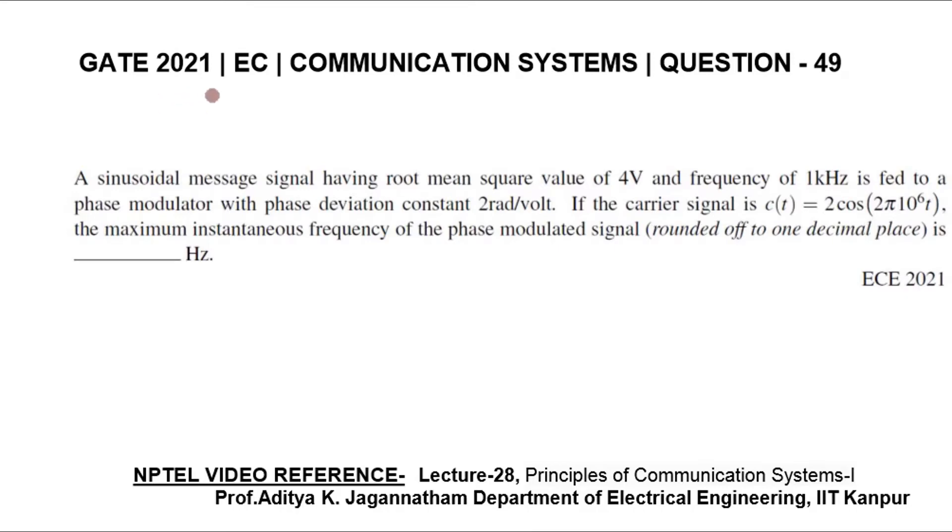This question was asked in GATE 2021 EC paper for two marks. A sinusoidal message signal having root mean square value of 4 volts and frequency of 1 kilohertz is fed to a phase modulator with phase deviation constant 2 radians per volt. If the carrier signal is C(t) equals 2 cosine 2π times 10 to the power 6t.